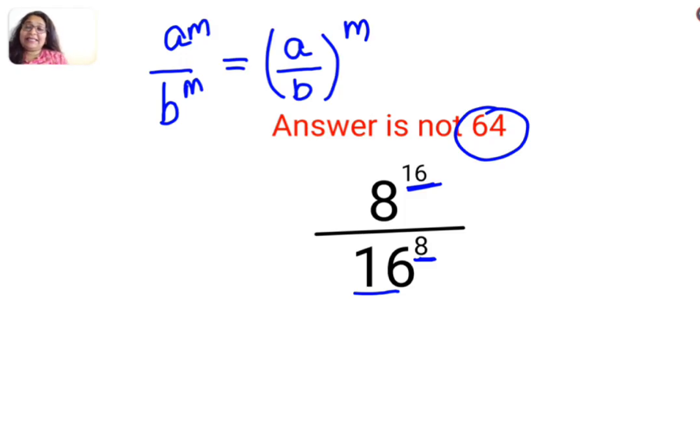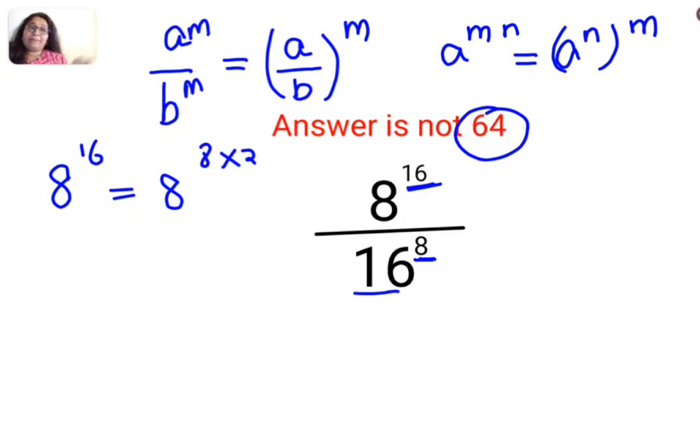But I can write 8 raised to 16 as 8 raised to 8 multiplied by 2. So A raised to M multiplied by N can be written as A raised to N the whole raised to M. Right?